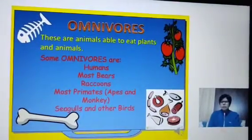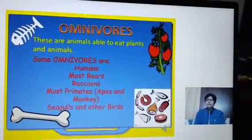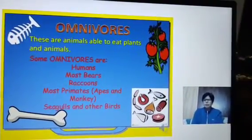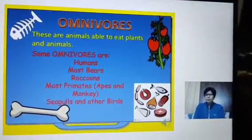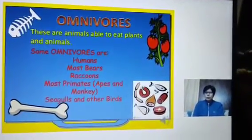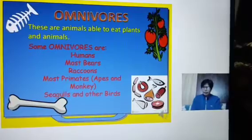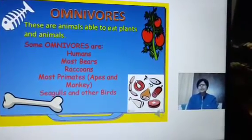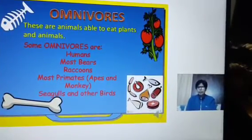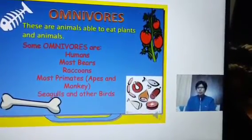Come to the third category of the classification of animals — that is omnivores. Omnivores mein wo animals hote hain jo plants bhi lete hain aur meat bhi lete hain. Toh wo dono tarah ke hote hain.